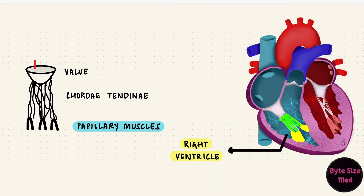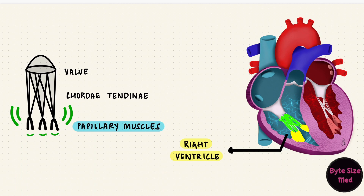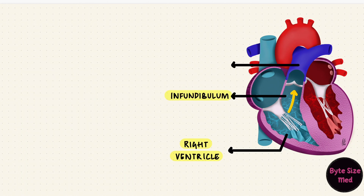When the right ventricle fills up, the tricuspid valve is obviously open. But once it's done filling, that valve will close. When the ventricle contracts, the pressure forces the valve upward. Without the papillary muscles and the chordae tendineae, the pressure would push blood back into the right atrium, and we don't want that. So when the ventricle contracts, the papillary muscles contract as well, tensing the chordae tendineae, keeping the valve shut. So blood can go the right way, which is through the infundibulum — the outflow tract of the right ventricle — which leads into the pulmonary trunk.